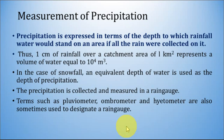Precipitation is expressed in terms of the depth to which rainfall water would stand on an area if all the rain were collected to it. If you have a large surface area which is perfectly watertight and you allow rainfall to fall on that surface, the rainfall will not percolate to the ground. If rainfall is collected uniformly all over the surface, the height of that water volume will represent the depth of rainfall, or simply the depth of precipitation.